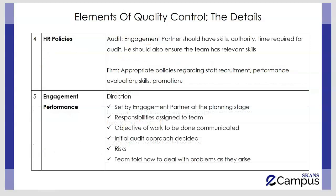The fourth element is HR policies. For an individual audit, it's the engagement partner who must ensure that both himself and the other team members have the required skills and time to conduct the audit. If the audit is done in a hurry or a team member is not competent due to the specialist nature of the engagement, quality will be compromised. At the firm level, on a wider scale, proper policies need to be in place for recruiting staff, evaluating their performance, promotion, and so on.